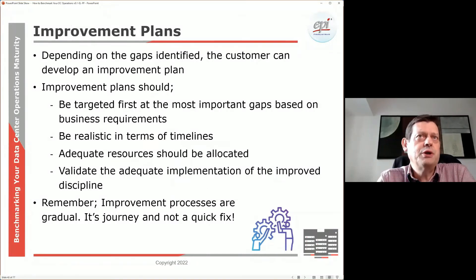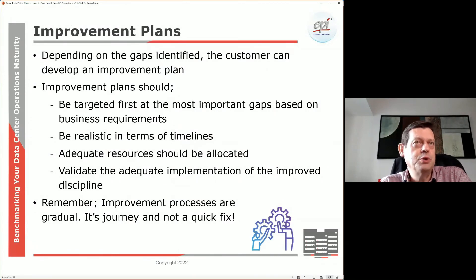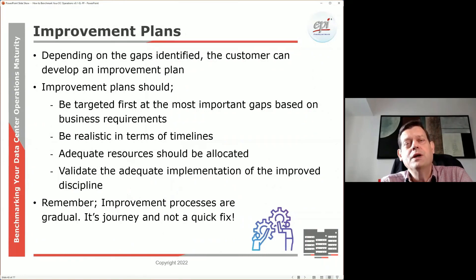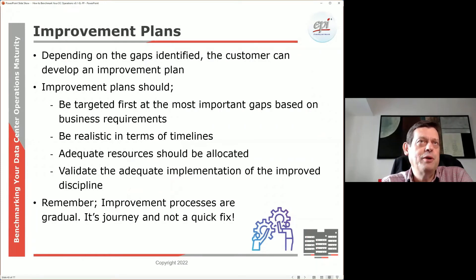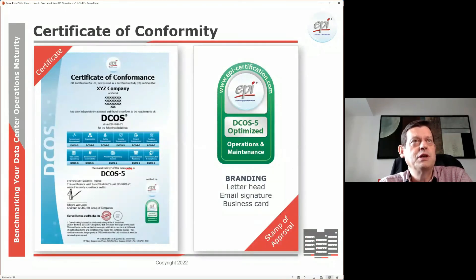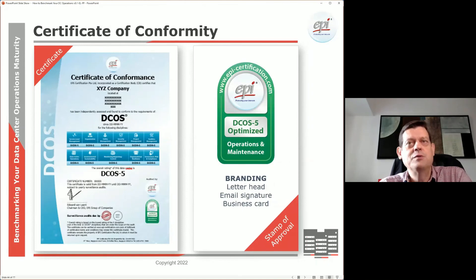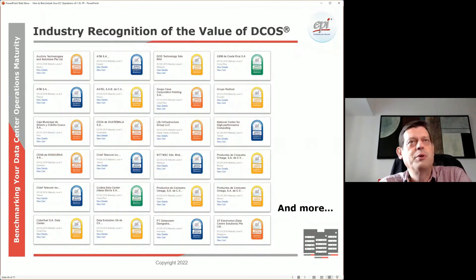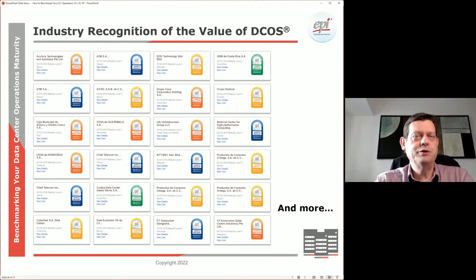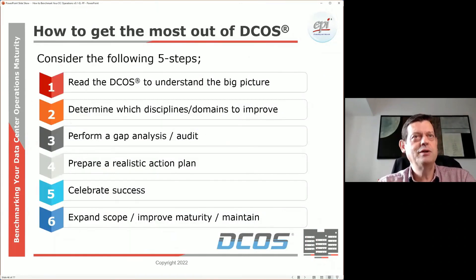Once you have that report, you start working on improvement plans — looking at the gaps, identifying who should close them, putting a champion in place with realistic time frames and the right amount of people to implement them. Once implemented, you can do a reassessment and celebrate your achievements, such as obtaining a certification and an insignia you can use in communications with customers to show you're serious about operations. Many customers have already done this at various maturity levels.